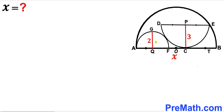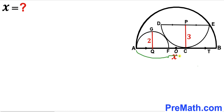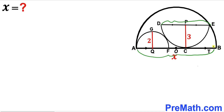Welcome to PreMath. In this video we have got two semicircles fully inscribed in a bigger semicircle as shown in the diagram, such that the center of the largest semicircle is O, the center of the medium semicircle is B, and the center of the smallest semicircle is Q. The radius of the medium semicircle is 3 units, the radius of the smallest semicircle is 2 units. The diameter AB of the largest semicircle is represented by X, and diameter DE is parallel to AB. Our task is to find the value of X — the diameter of the largest semicircle.